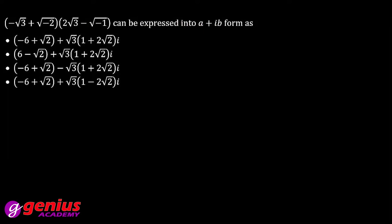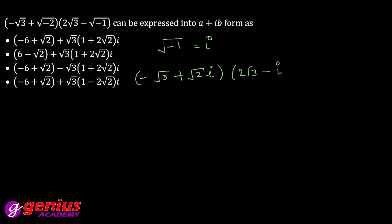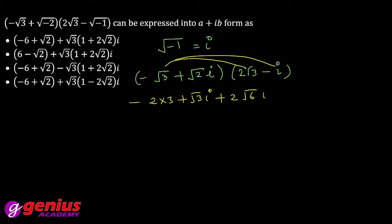Next question: you have to express the given expression in a + ib form. Under root minus 1 is iota. The expression is minus root 3 plus root 2 times under root minus 1, which is iota. Similarly, 2 root 3 with minus 1 under root gives iota. Multiplying: 2 into 3 is 6, then minus minus is plus root 3 iota, plus 2 root 3 times root 2 gives root 6 iota, plus minus minus gives root 2 iota squared.